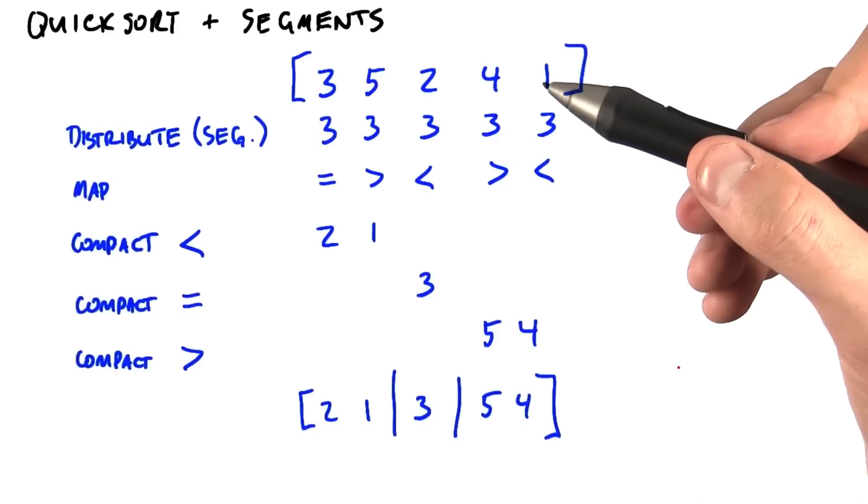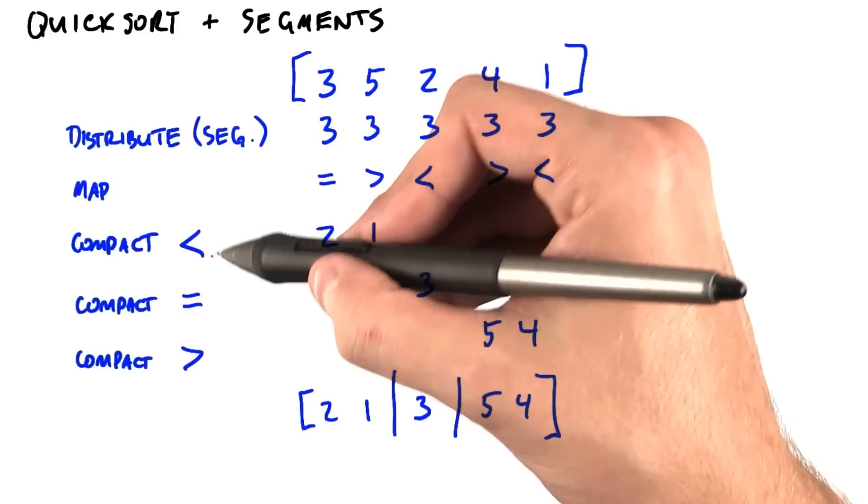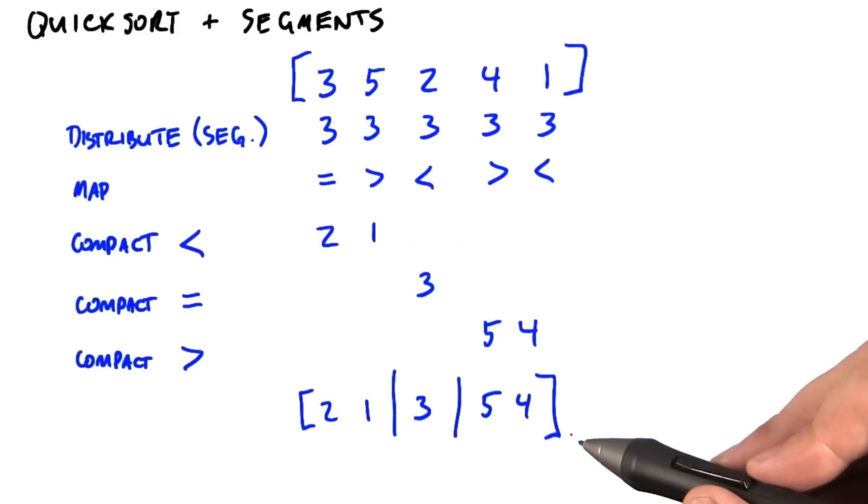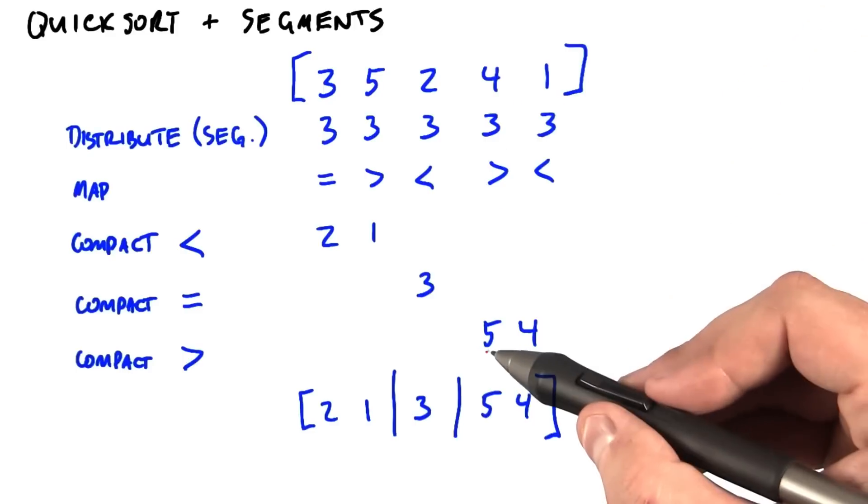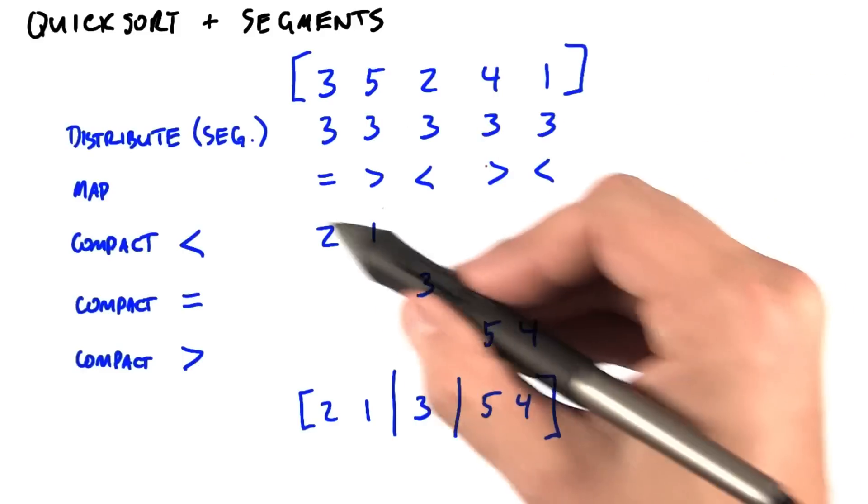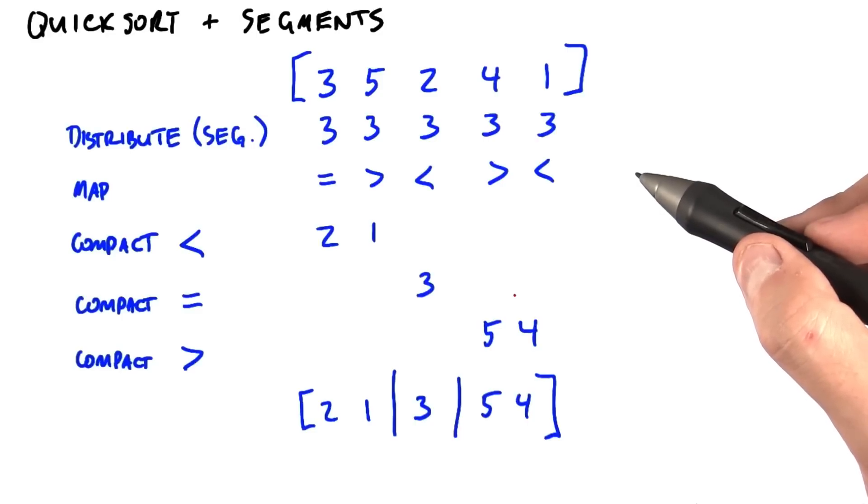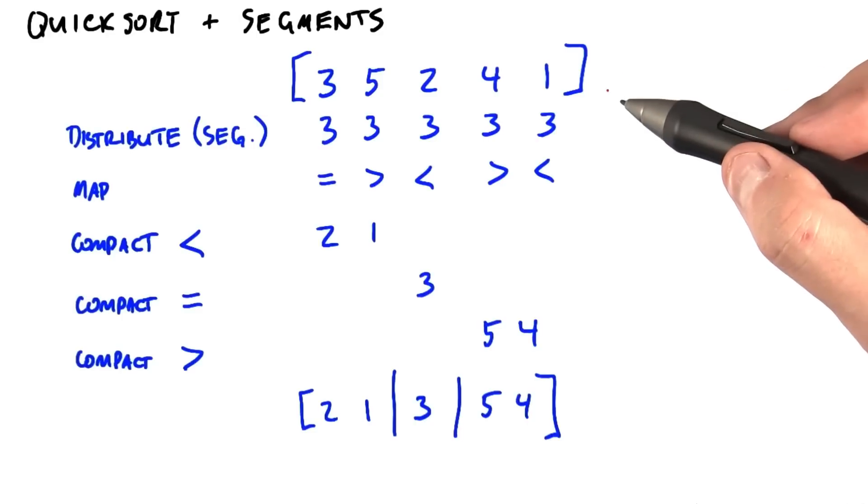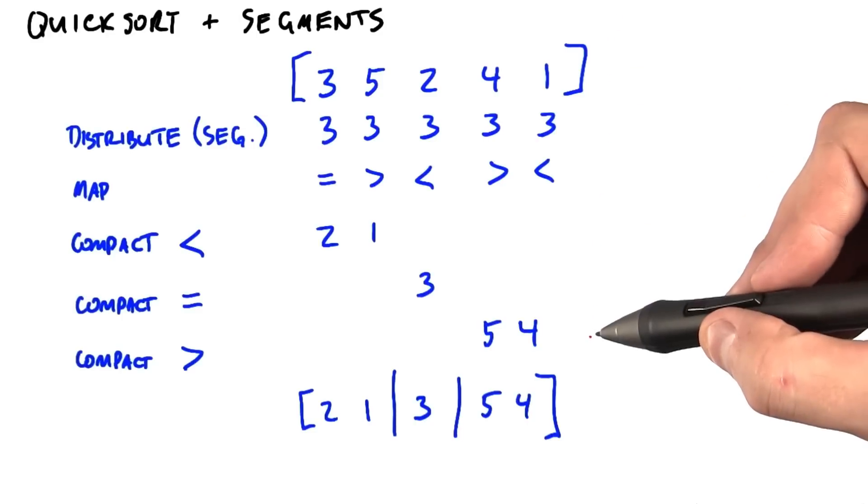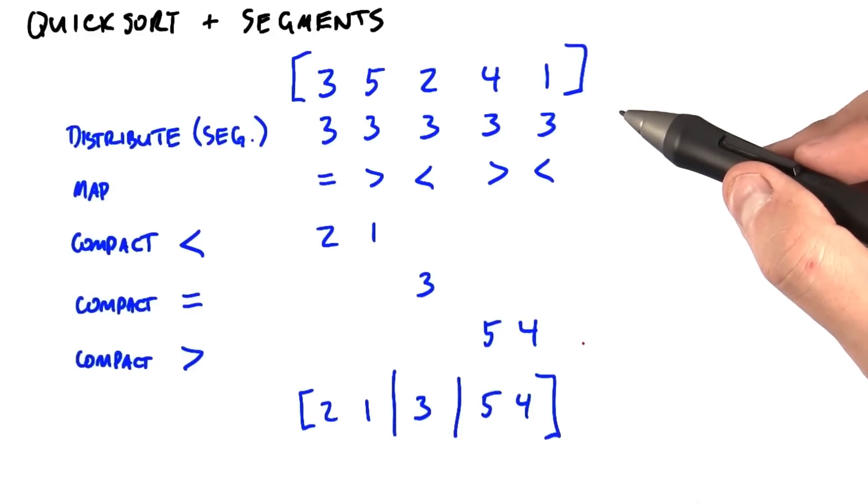For quicksort, when we begin to process the initial array, we're going to use distributes, maps, and compacts to eventually divide it into three segments. We can use segmented scans to do all the necessary operations that we need to make this work, including distributing a pivot across a segment for comparisons and splitting a segment, which is similar to the way that we split on a particular bit in radix sort. Quicksort is interesting because it shows you how useful segments can be, that they can let you mirror the same approach you use in recursion without actually using recursion.